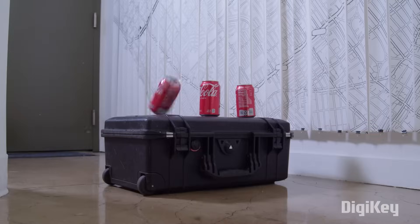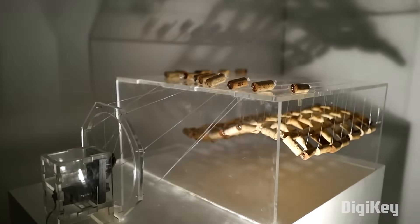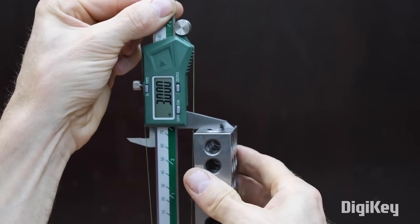This week on Maker Update: weaponized candy, a smart bot ball contraption, floating sine waves, and getting the most out of your digital caliper purchase.